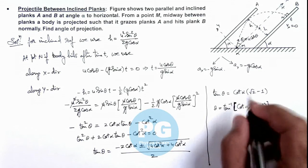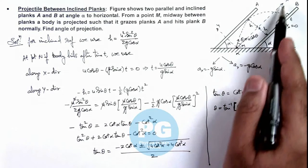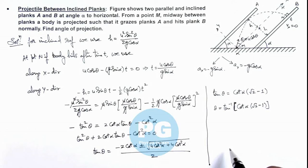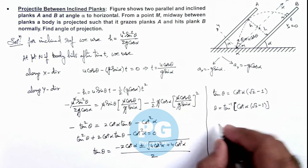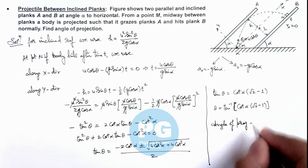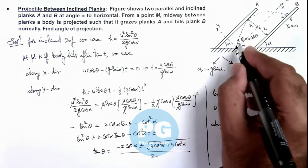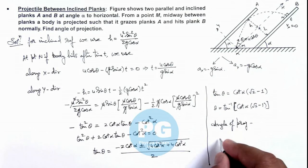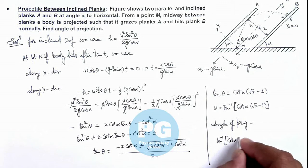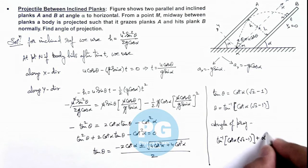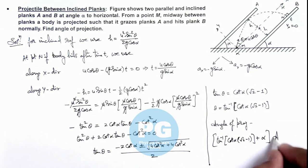So the value of theta is tan⁻¹[cot(α)·(√2 − 1)], which is the angle with respect to the inclined reference at which the body must be projected to satisfy the given conditions. The total angle of projection from the horizontal is theta plus alpha, so the final angle of projection equals tan⁻¹[cot(α)·(√2 − 1)] plus alpha.